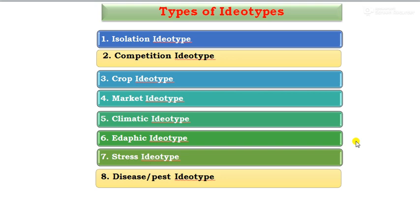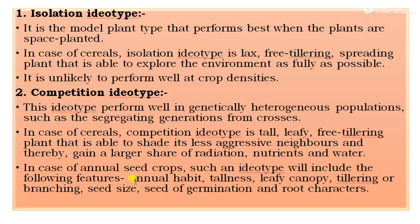Next, the types of ideotype. There are eight types: first, isolation ideotype; second, competition ideotype; third, crop ideotype; fourth, market ideotype; fifth, climatic ideotype; sixth, edaphic ideotype; seventh, stress ideotype; and eighth, disease/pest ideotype.